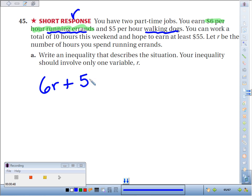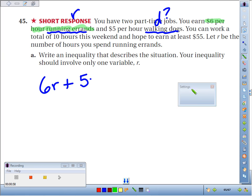Now, I make $5 an hour, but am I going to put 5 times D for walking dogs? The answer is no because they only want this as one variable. Keep in mind, this is the part people often overlook, you can work a total of 10 hours this weekend.